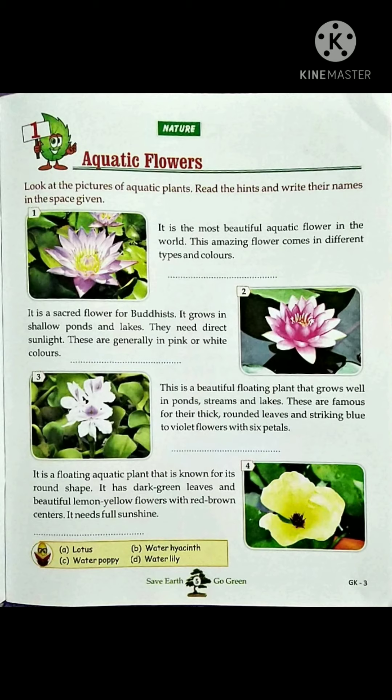Let me repeat again so all students listen carefully. First number: it is the most beautiful aquatic flower in the world — this amazing flower comes in different types and colors. Flower name: water lily. Next: it is a sacred flower for Buddhists, it grows in shallow ponds and lakes.